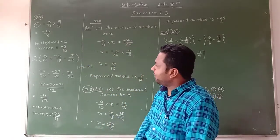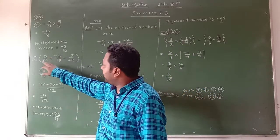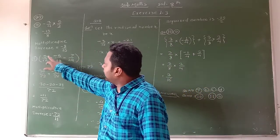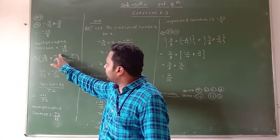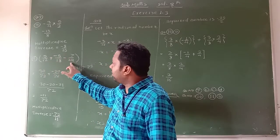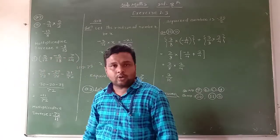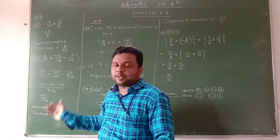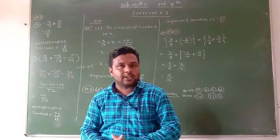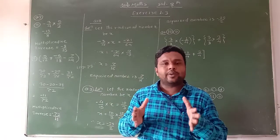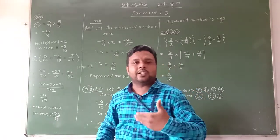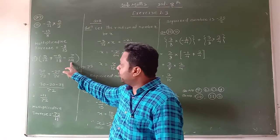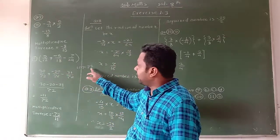Now see question E. Here, an addition and subtraction of rational numbers is given: pi upon 12 plus minus 5 upon 18 minus 7 upon 24. First, we solve this. For addition and subtraction of rational numbers, we have to make the denominators equal by taking the LCM of 12, 18, and 24. The LCM is 72.